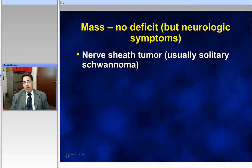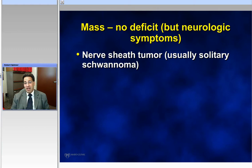A basic fact that is really not emphasized loudly enough is that most — almost all — benign nerve sheath tumors present with some neurologic symptoms but without deficit. It is exceedingly rare for a patient with a classic benign nerve sheath tumor to have a deficit of weakness at the time of onset. That's very important.